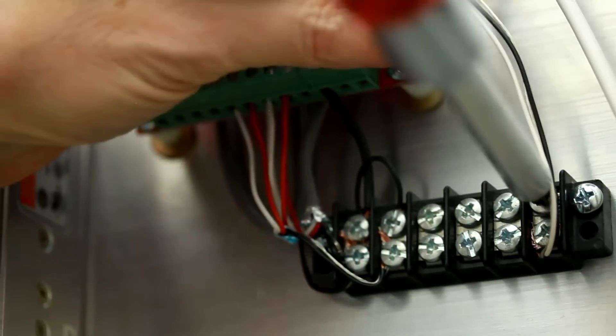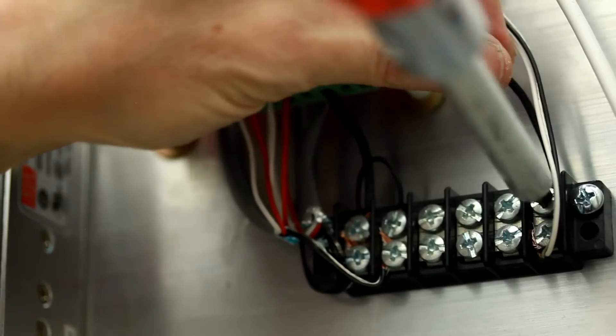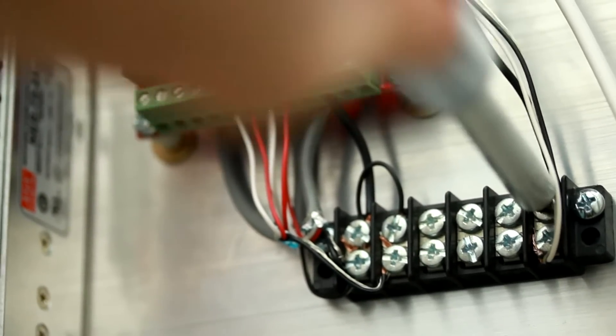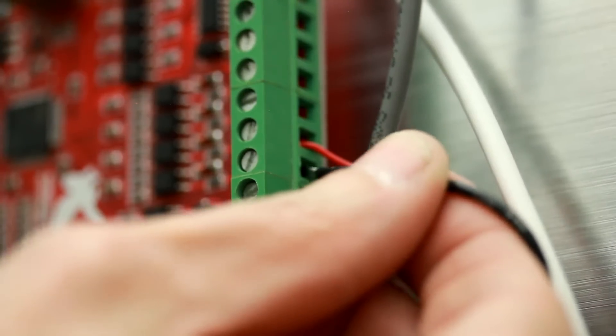Now I'm going to take a wire from this side of the terminal block to the DCM, the DC common terminal of the Mach 3 USB controller. This is the ground terminal for the 24 volts.